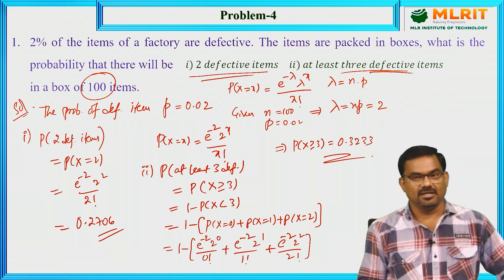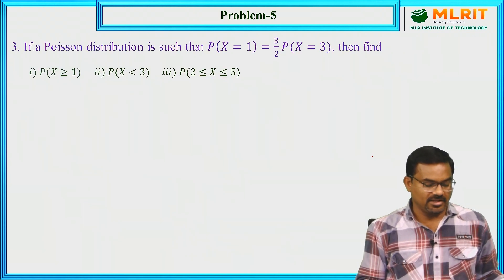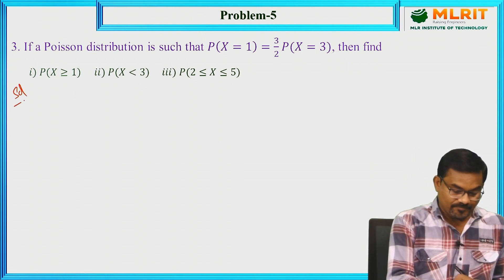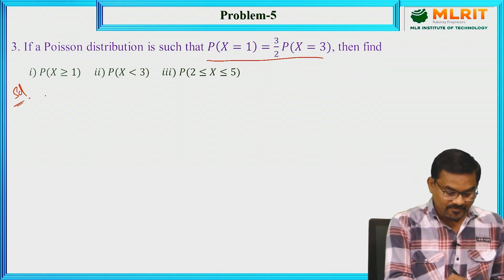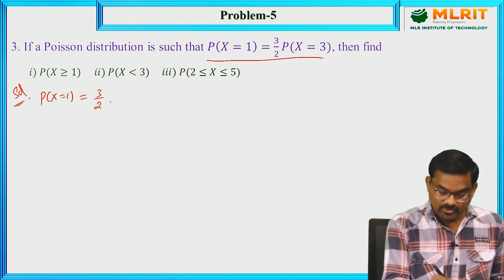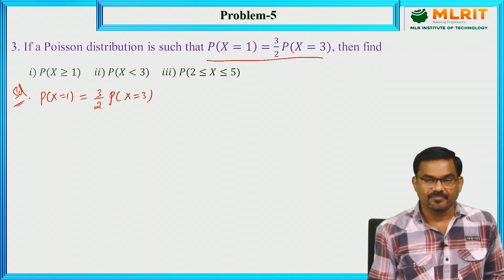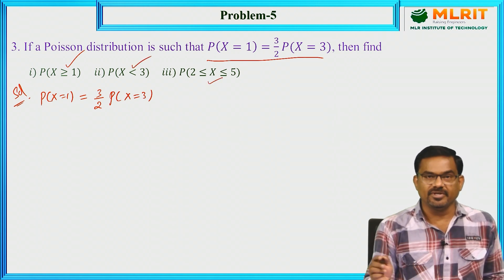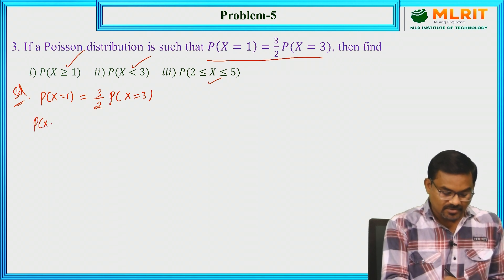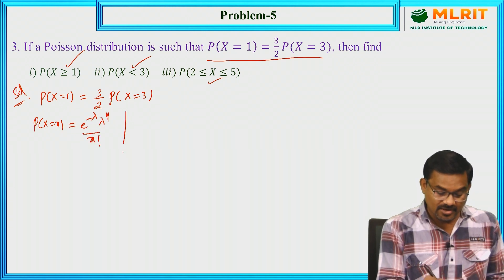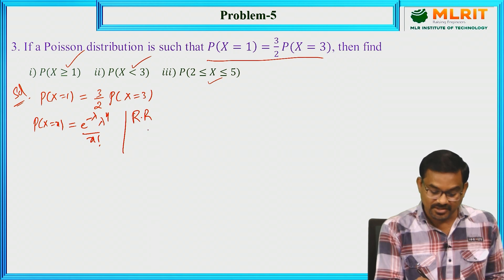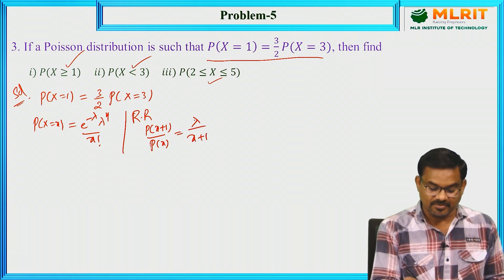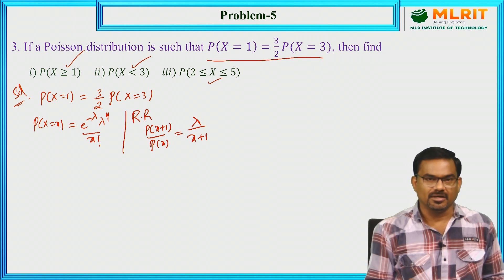Like this we can find the required probabilities using Poisson Distribution. The next problem: a relation between values is given — P(X=1) = (3/2) · P(X=3). Find the probability of X ≥ 1, X < 3, and X lying between 2 and 5.